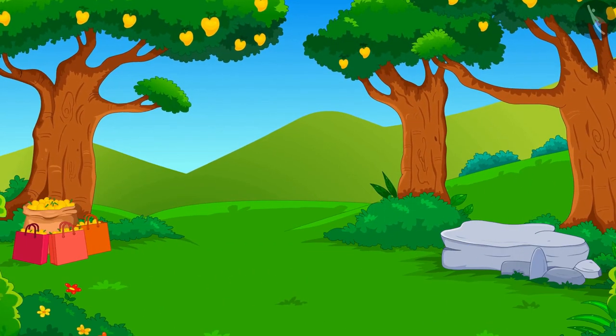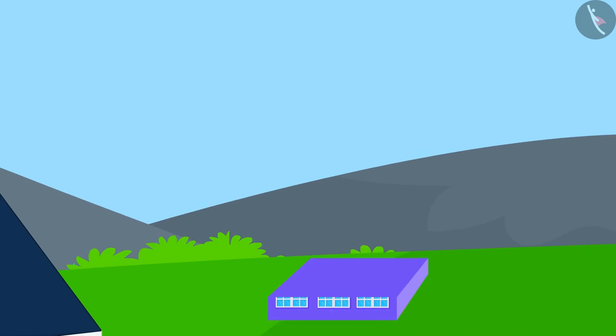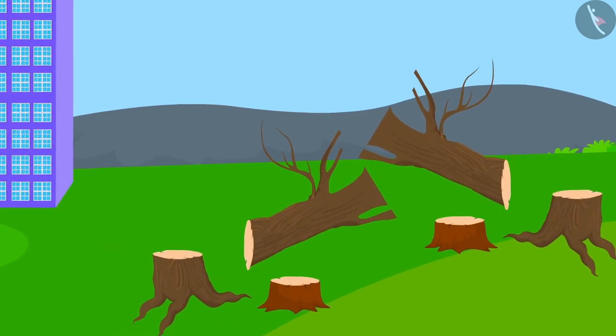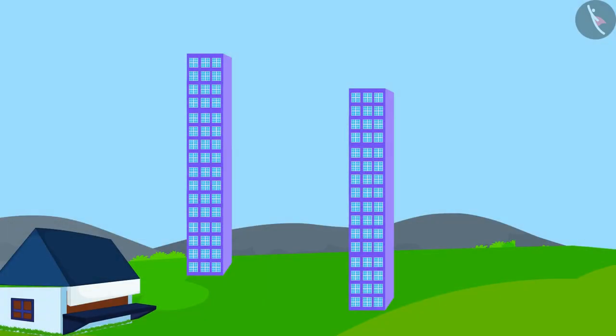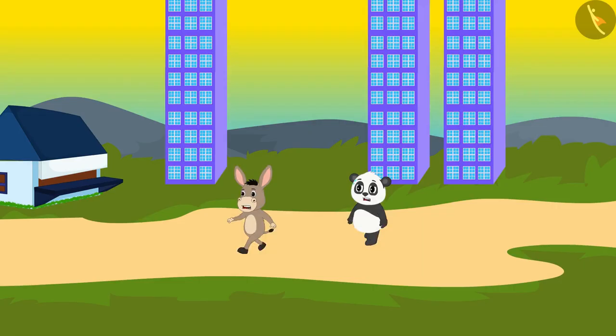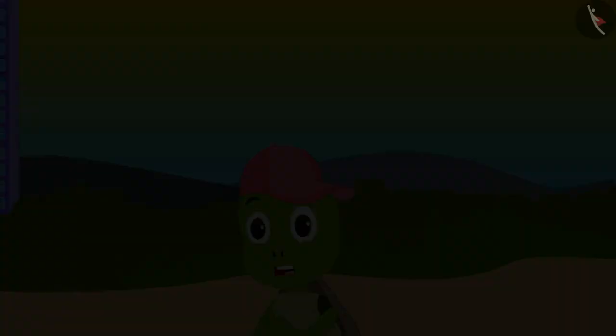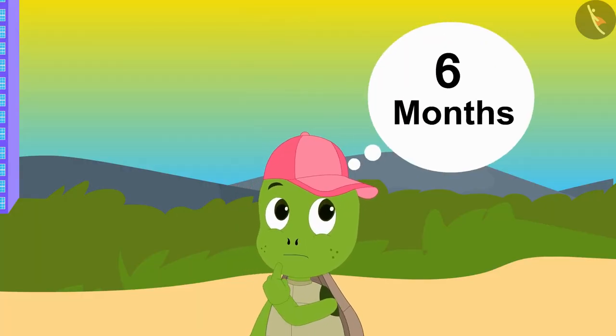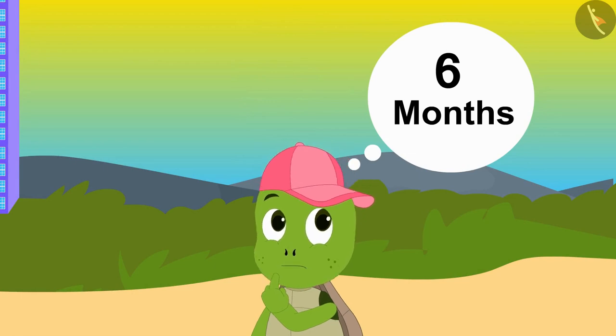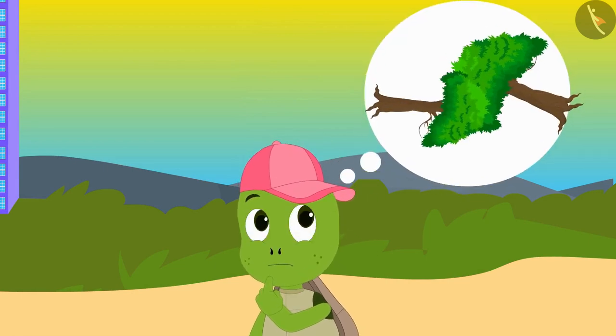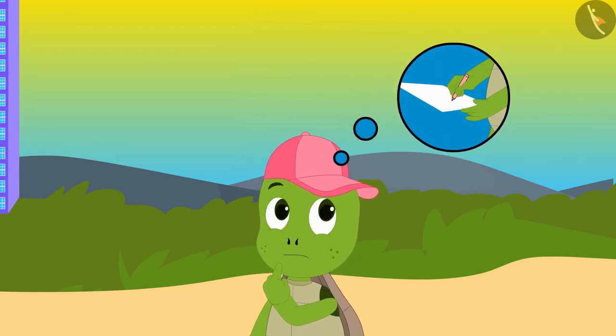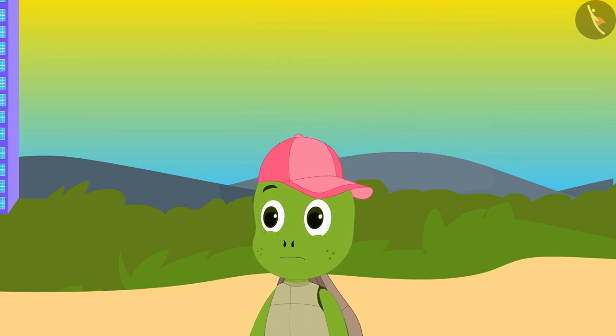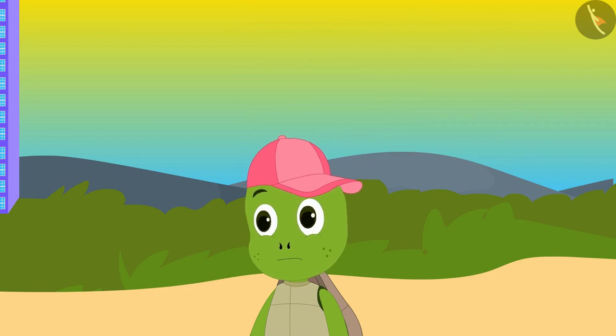The villagers in Champapur are cutting down many trees to build buildings. Due to this, the heat is increasing day by day in the village. Seeing this, Tufan decided that he would record the number of trees that have been cut every month for 6 months, so that after 6 months, showing this information to the villagers could prevent them from cutting more trees.